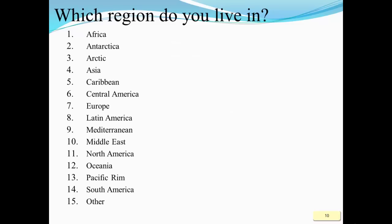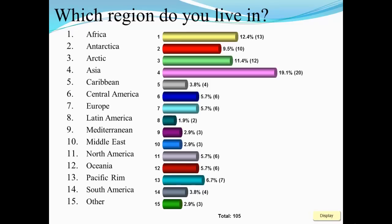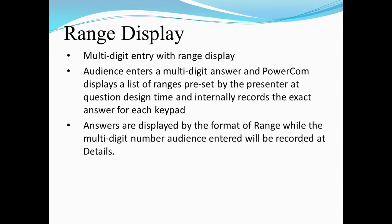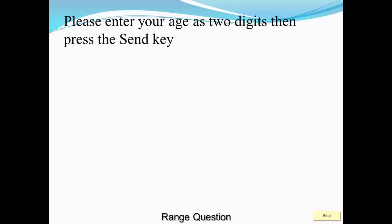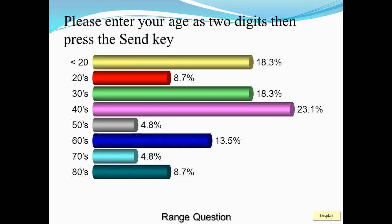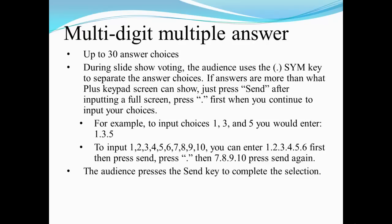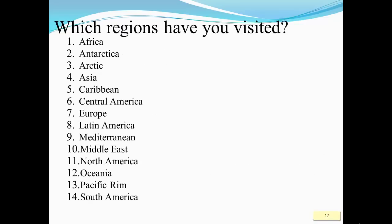We can do multi-digit single answer questions up to 30 choices — choose one. We can do range questions where you ask people to enter numbers and the software sorts out which bar they go into. We can also do multi-digit multiple answer questions with up to 30 answer choices, where a certain number of them are correct — choose the ones you think are correct.